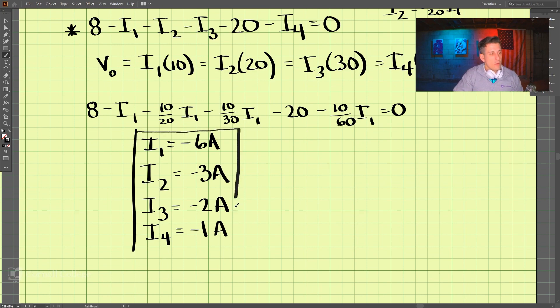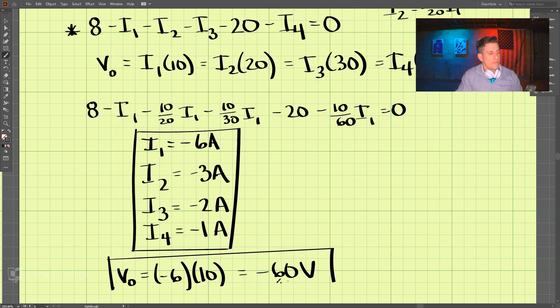The last thing we're to find is V0. And V0 is equal to one of these, we can just plug that in right here. We have negative 6 amps times 10, and that should equal negative 60 volts. And that is our solution for V0.